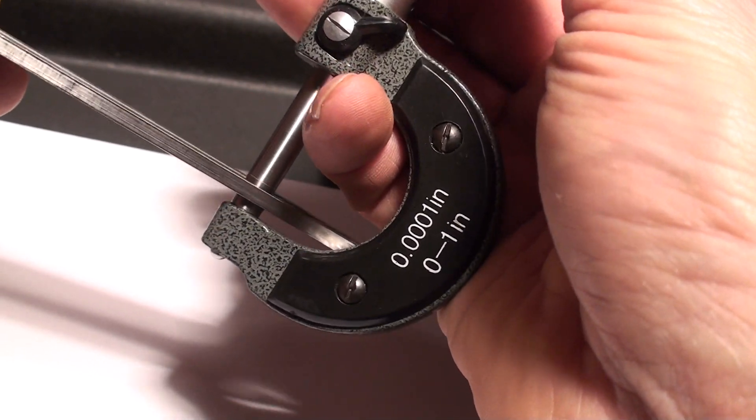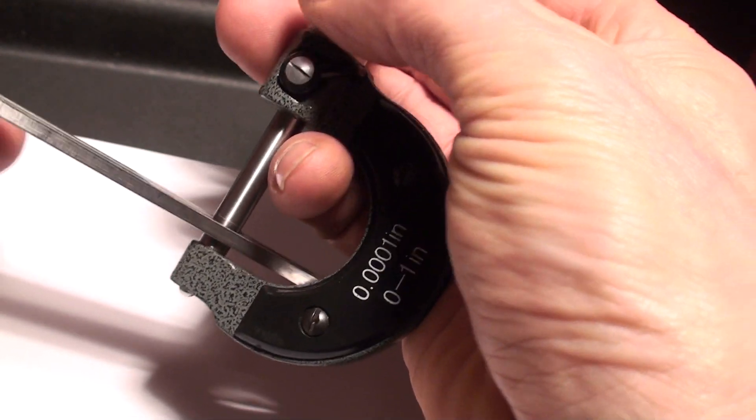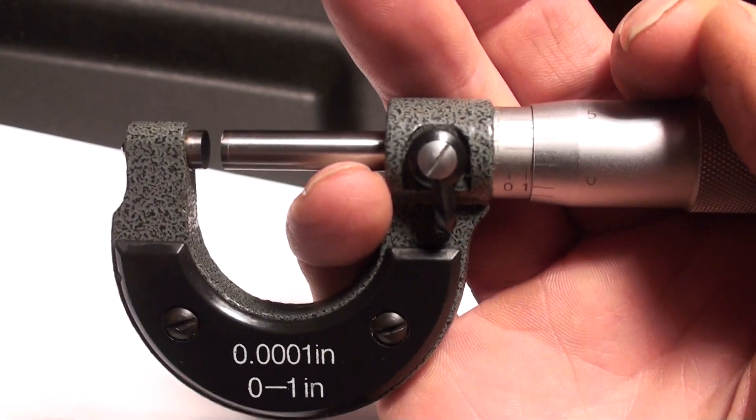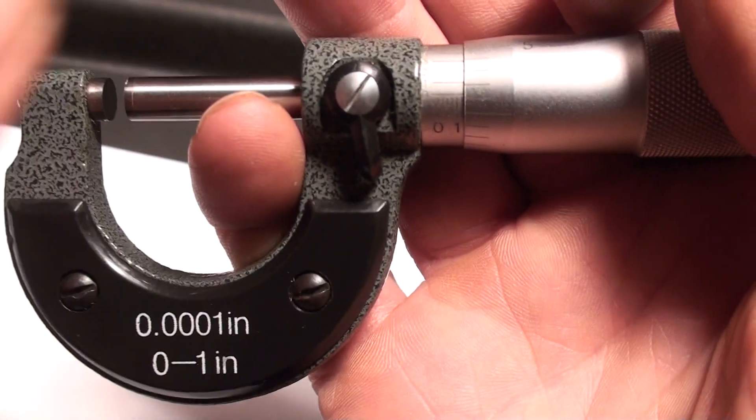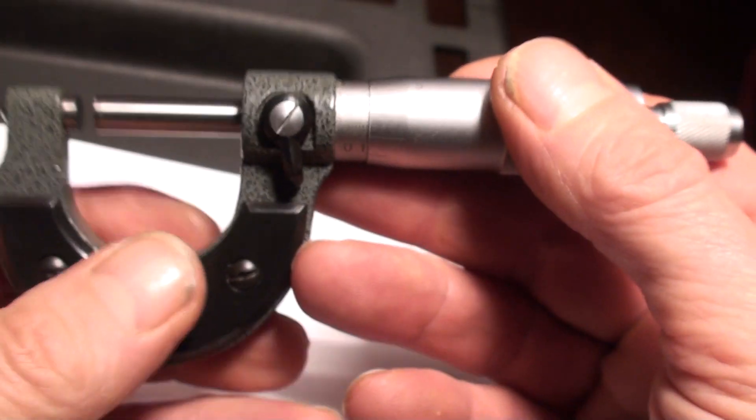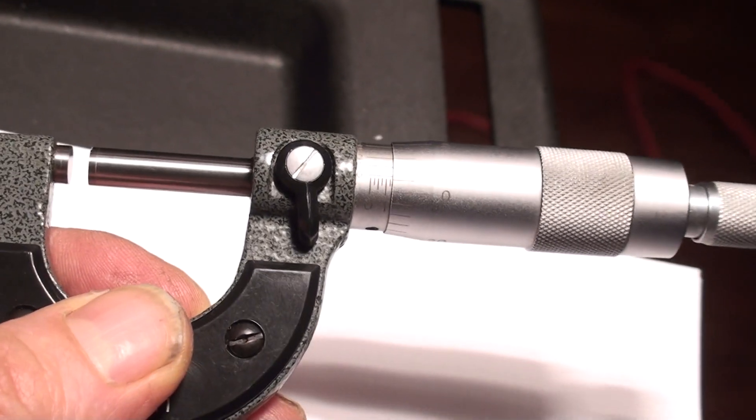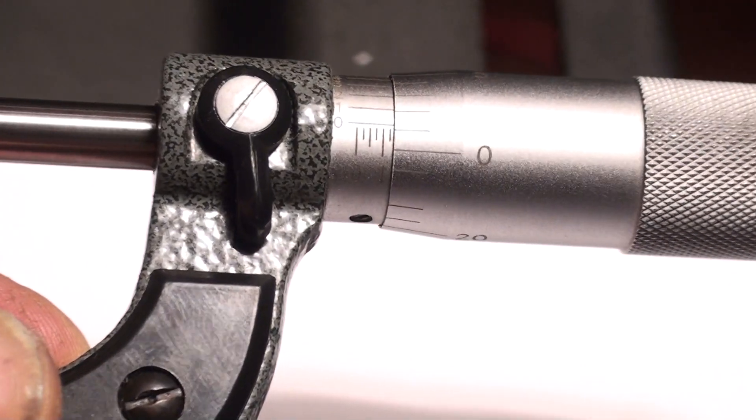Then you lock it there and read your measurements. The measurements are right on the scale here. I'll zero in on the thimble, and we'll see what we can do here for you.